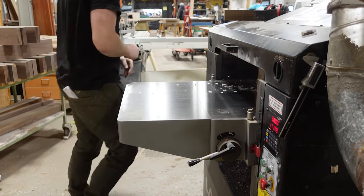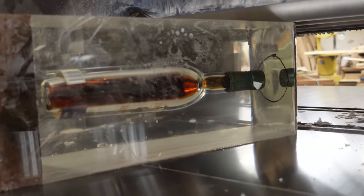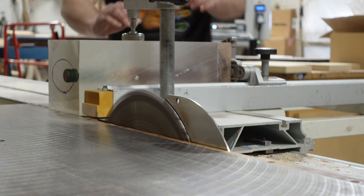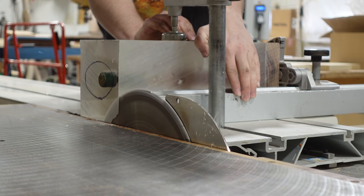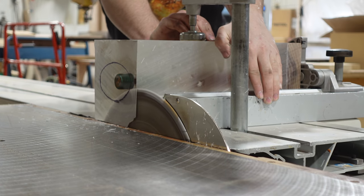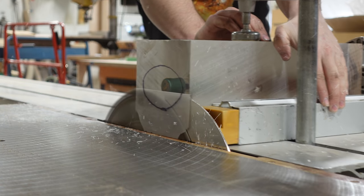Here's the panel saw. Because our blade can only go so high, obviously we have to do this in two different steps. Joe will cut it like this, flip it over, and then make the cut in the other direction.